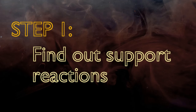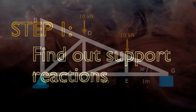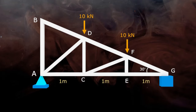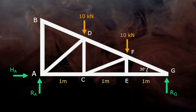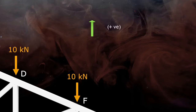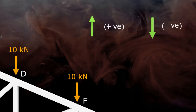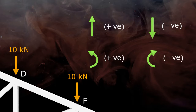The first step in this method is to find out the support reactions. At joint A there is a hinge support, so there will be 2 reactions: Ra in the vertical direction and Ha in the horizontal direction. At joint G, the truss is simply supported on a wall, so there will be only one reaction Rg. Before we begin, let's remember the sign conventions: upward force is positive, downward force is negative, anti-clockwise moment is positive, and clockwise moment is negative.